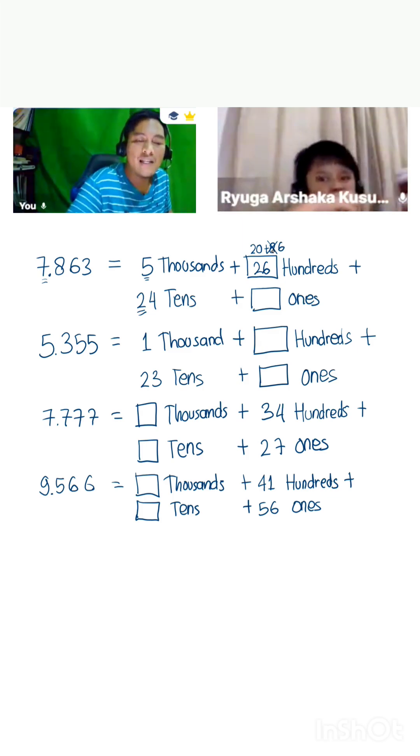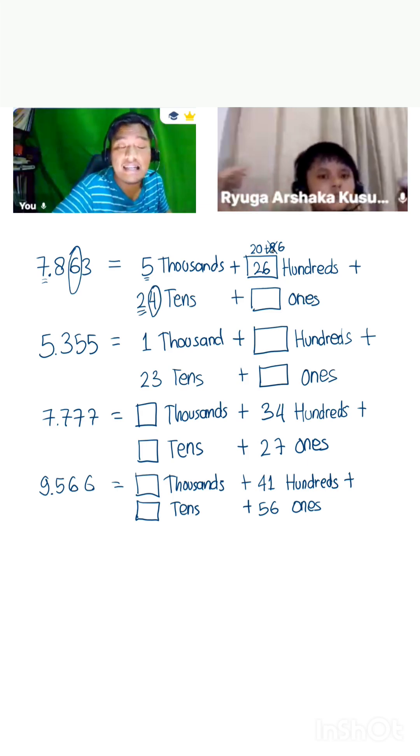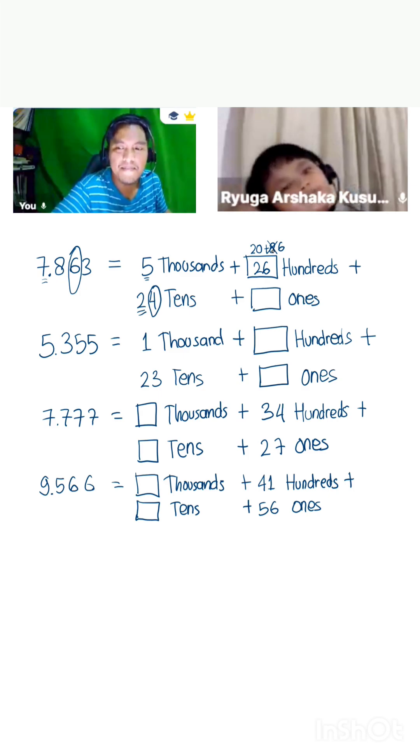We actually need six in tens. Agree with that? But we already have four tens. It means how many more tens do we need in order to create the number six tens? How many more tens? Two. Two more tens.